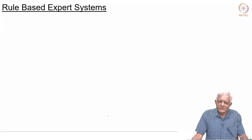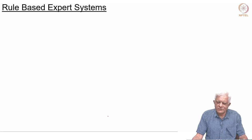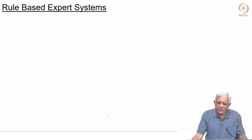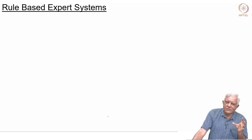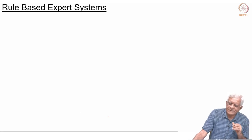We are back. We have looked at first-order logic — syntax, semantics, rules of inference, forward chaining, implicit quantifier form, and how to treat existentially quantified variables using the method of Skolemization.